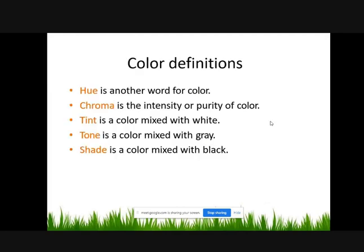Color Definitions: Chroma is the intensity or purity of a color. Tint is a color mixed with white. Tone is a color mixed with gray.